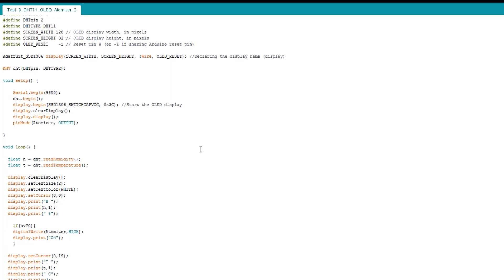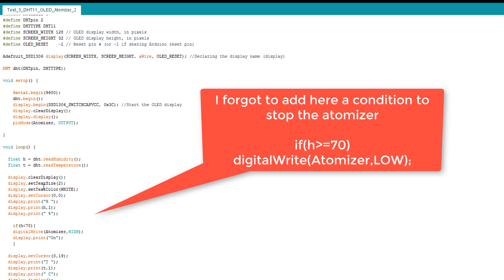The code is very easy. I'm reading the humidity and the temperature and showing them on the screen, on the OLED screen.